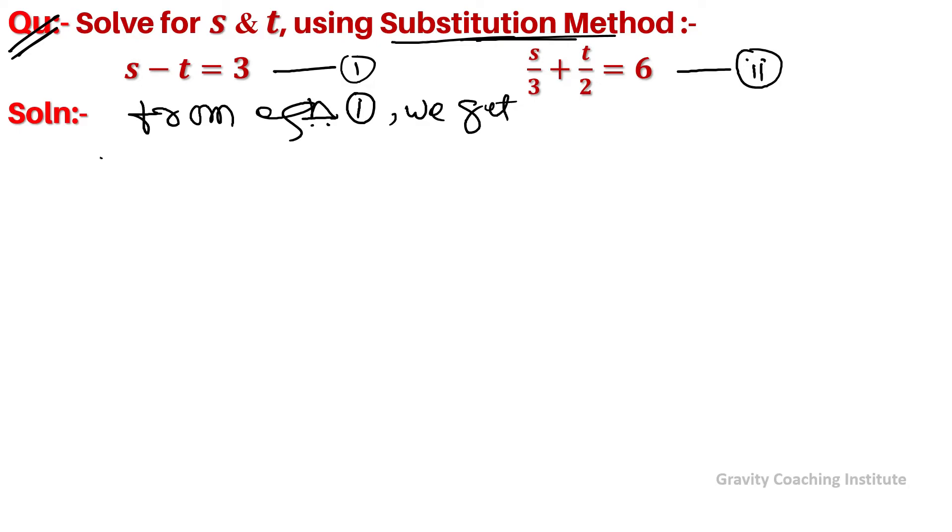From the first equation s - t = 3, we get s = t + 3. We will substitute this.